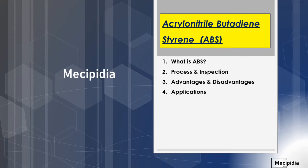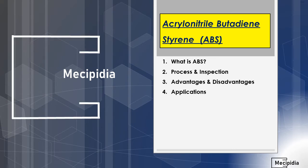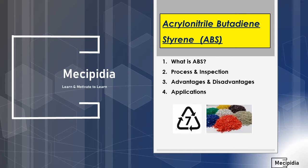Welcome to Mykipedia, where our aim is to learn and motivate others to learn. Today's topic is ABS — acrylonitrile butadiene styrene — a plastic used in the engineering field. We will cover what ABS is, its processes and inspections, advantages and disadvantages, and finally its applications.